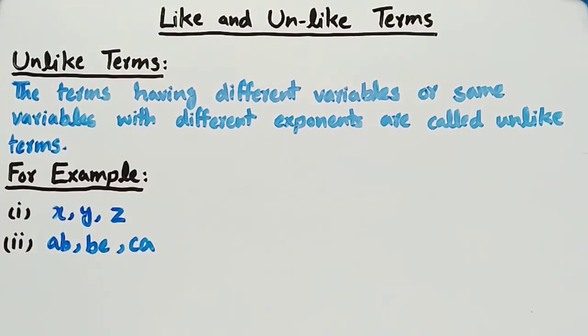For example, the terms x, y, z and ab, bc, ca are examples of unlike terms.